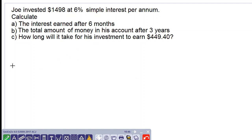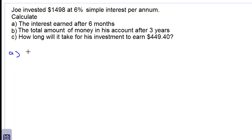Calculate the interest earned after six months using the formula simple interest equals principal times rate times time all over 100. We have the principal here 1498, the interest rate 6%, time six months, but we are working in years so we will get 0.5 years or one half of a year.